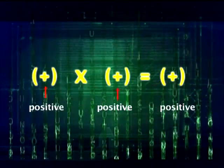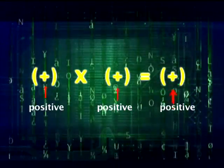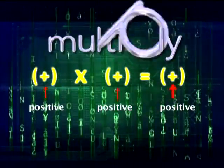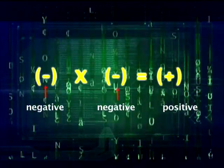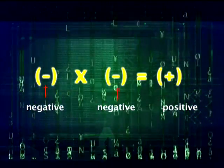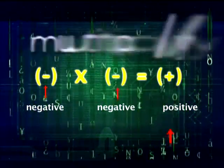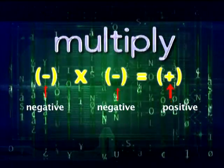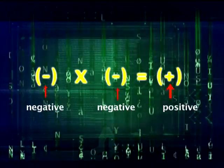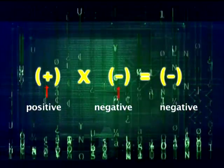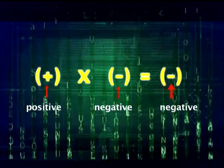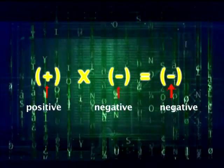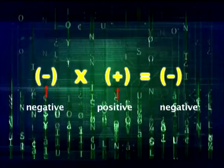Positive times positive, multiply and keep the positive line. Negative times negative, becomes positive — leave the negative behind. Positive times negative, multiply and use the negative line.